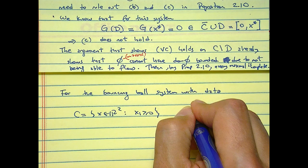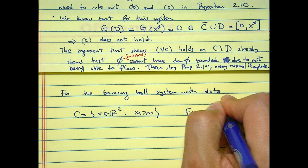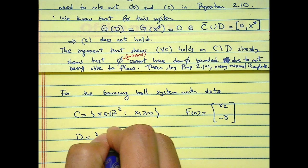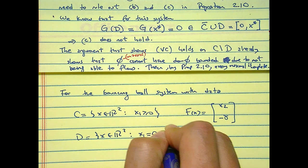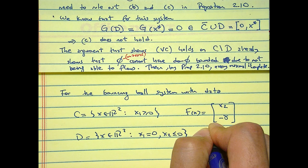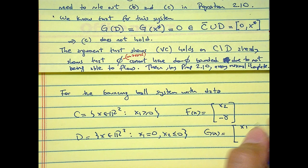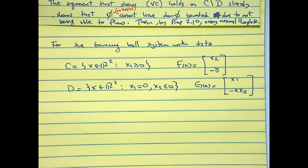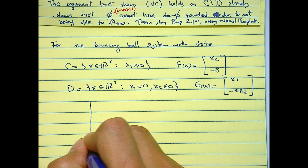So for the bouncing ball with the following data: C equal to every x in R2 such that x1 is larger than 0, f should be lowercase, x2 minus the gravity, D to be any x in R2 such that x1 is equal to 0, x2 is less or equal than 0, and the restitution adjuncts.